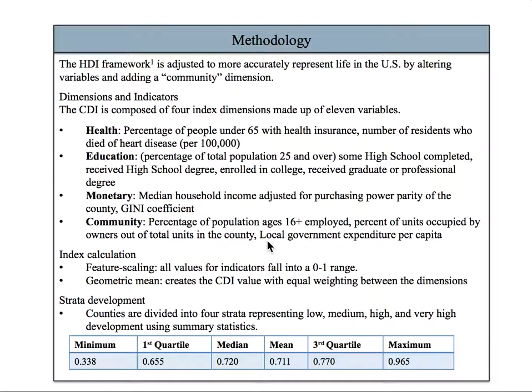The Gini coefficient is a value that represents how equally wealth is spread throughout the community, which is important to measure if members of the community are being left behind in development. Median household income is put in terms of purchasing power parity in order to accurately compare wealth between areas where living costs may vary.